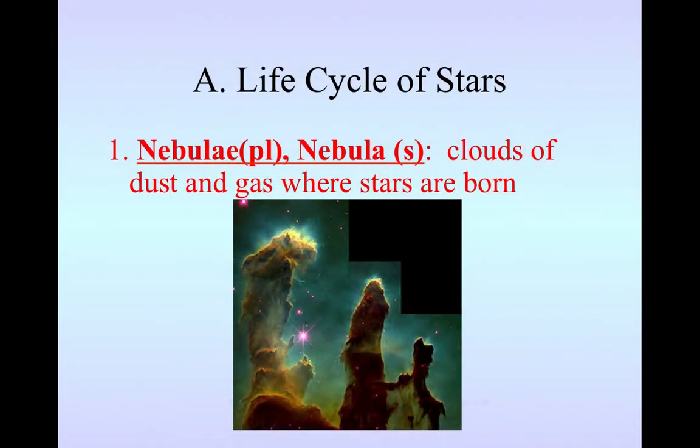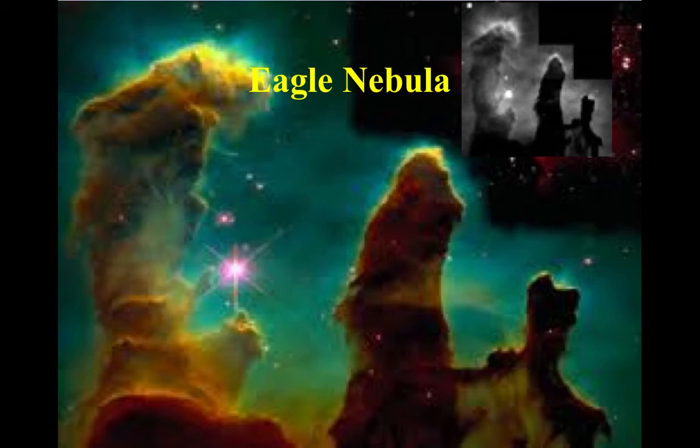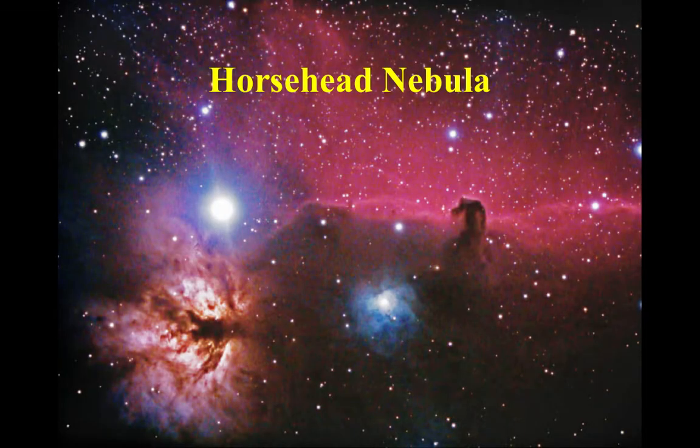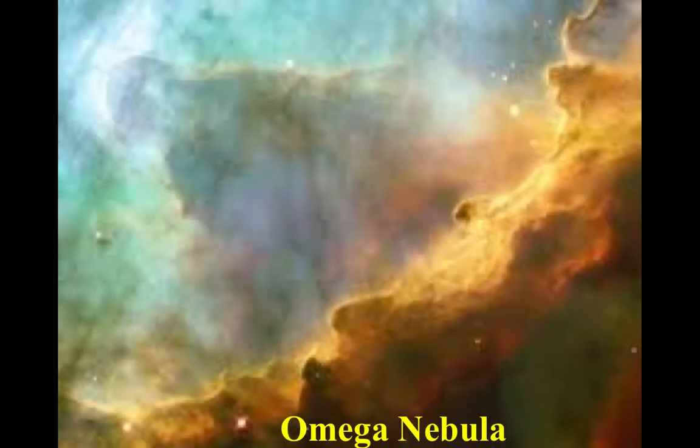Or the plural of nebula as I always mess up is nebulae. So a nebula is a cloud of dust and gas where stars are born. And here are some of those beautiful pictures that we looked at in class of our Eagle Nebula. You can see the one in the upper right hand corner there is a picture of the visual spectrum and then the bottom one is enhanced using different types of telescopes that we talked about. There's the beautiful horse head and then the Omega Nebula.